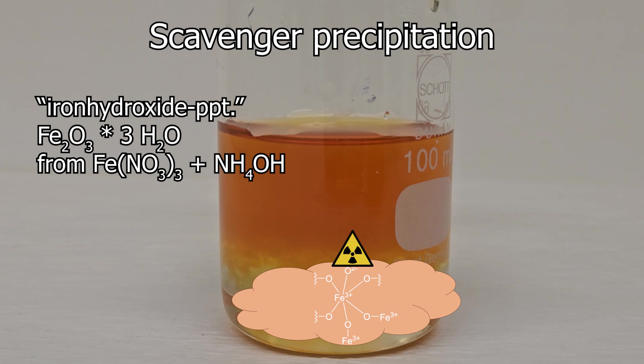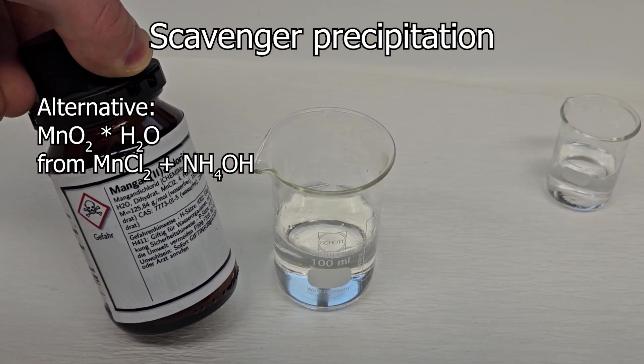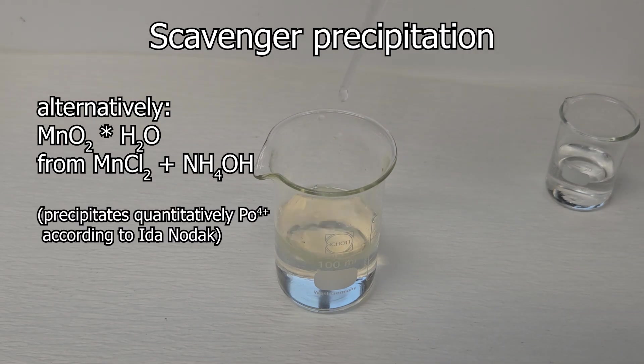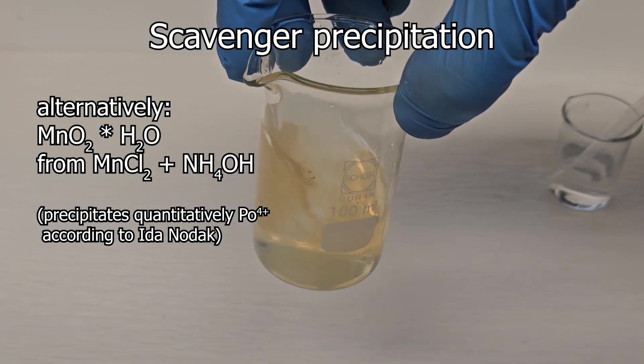Alternatively, the whole thing can also be done with manganese-2-plus, which is isoelectronic to the iron-3-plus. And it also forms this manganese dioxide hydrate with ammonia solution. Same story, but a bit unsuitable for wastewater due to the environmental problems that come with manganese-2-plus ions.